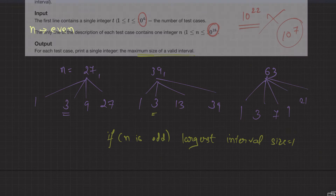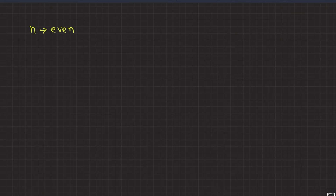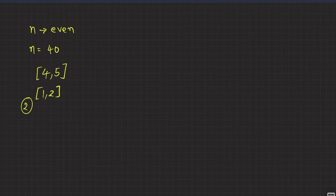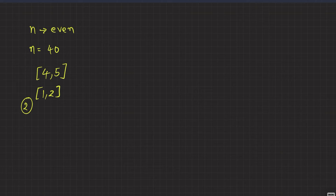Now let's talk about when N is even. Taking N = 40, the largest valid interval is of size 2 - for example, interval [4, 5]. You can't get an interval of size more than 2. In such questions, when you don't know how to reach the answer, a common pattern in competitive programming is: assume the answer exists and work backwards. Let's assume I know the largest valid interval and its size is, say, 5.